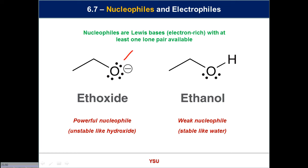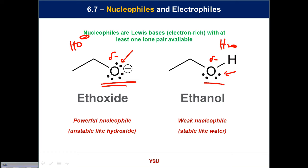To be a nucleophile you must have a lone pair — or more generally, a pair of electrons you can share with something else. Most things that are basic can also be nucleophilic, because a base needs a lone pair and a nucleophile needs a lone pair. Both species here fit the bill because they have a delta-negative oxygen with lone pairs. Between the two, the oxide on the left is less stable — it has extra electron density, like hydroxide, which is unstable and reactive. By analogy, water is much more stable. So the negatively charged conjugate base tends to be more nucleophilic than its associated acid.